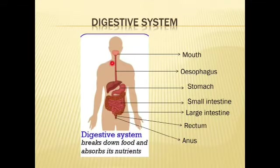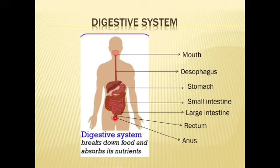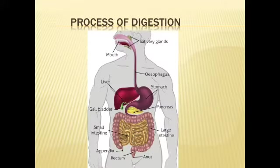In the digestive system, here is the mouth, and here is the esophagus, and here is the stomach, and here is the small intestine and large intestine, the rectum, and the anus. It breaks down the food and absorbs its nutrients in the process of digestion.